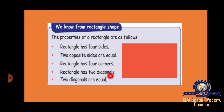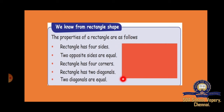A rectangle also has four sides. Two opposite sides are equal — these two sides are equal and those two sides are equal. It also has four corners and two diagonals. The two diagonals will be equal.